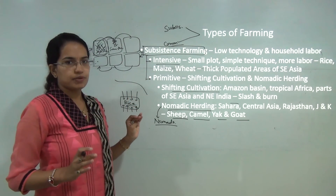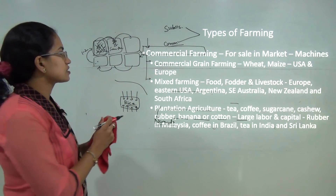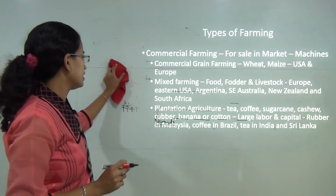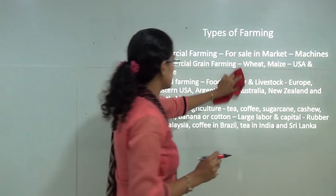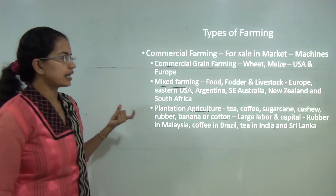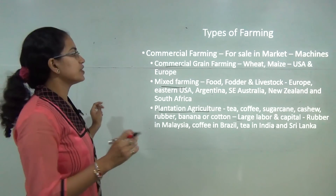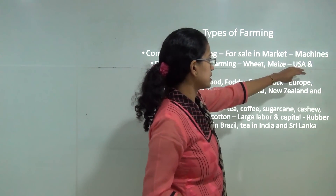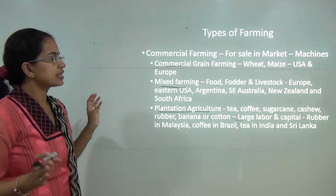These are the various types of subsistence farming, mainly done for household use — a country like India is basically focused on subsistence farming. Commercial farming aims to sell produce into the market, employing large machineries for cultivation. There are three basic types: commercial grain farming, mixed farming, and plantation agriculture. Commercial grain farming involves cultivation of wheat and maize at large scale on hectares of land with semi-autonomous machinery, common in the United States and Europe where there is large availability of land with low population density.